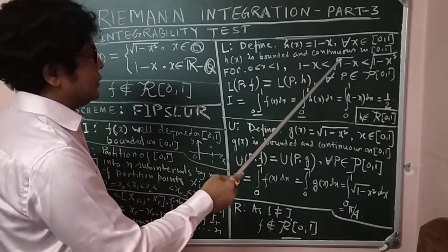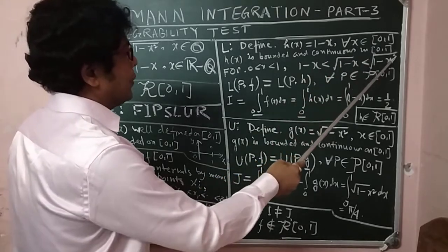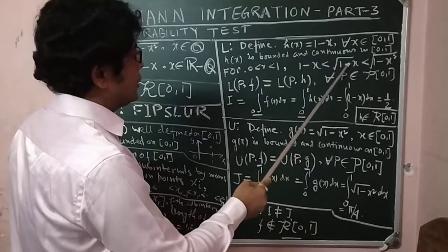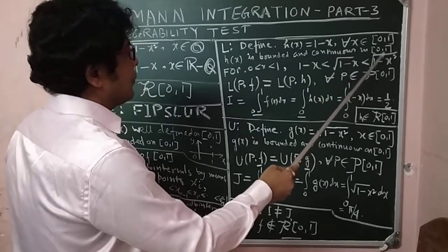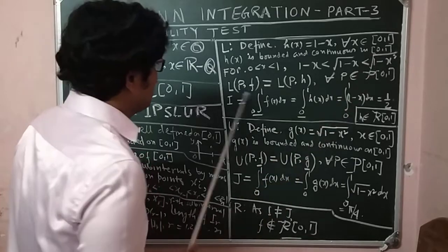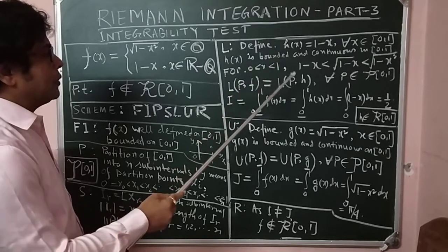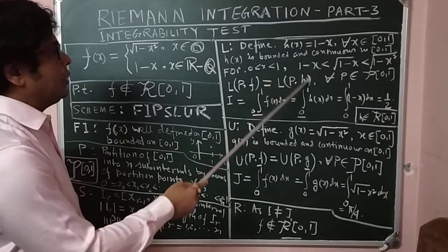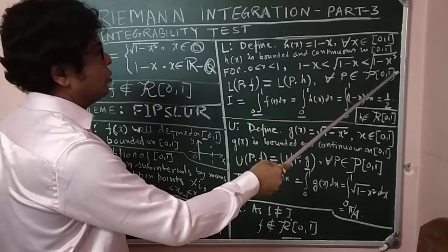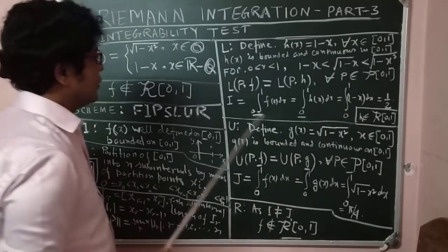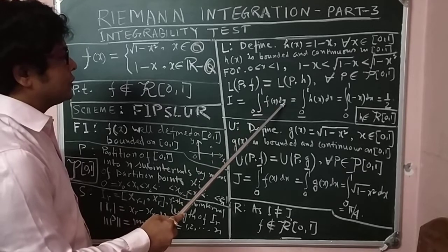For 0 < x < 1, we have the inequality that the value of the function satisfies: 1-x ≤ f(x) ≤ √(1-x²). With this inequality we see that h(x) = 1-x is the lower value in any interval. So if we define L(P,f), the lower sum actually reduces to L(P,h) for all partition P ∈ P[0,1].